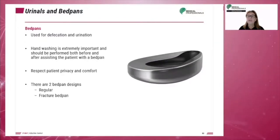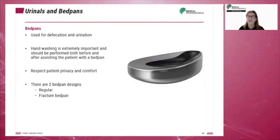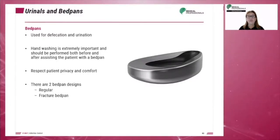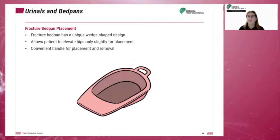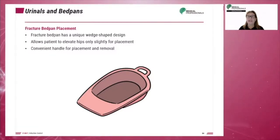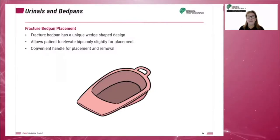The bedpan is used for male and female defecation or female urination. The patient's privacy and comfort should always be respected. There are two bedpan designs: the regular and the fracture bedpan. The fracture bedpan has a unique wedge-shaped design — it is not as high as the regular bedpan and allows the patient to be elevated slightly for placement. It also has a convenient handle for placement and removal.